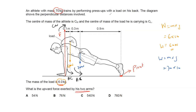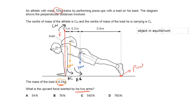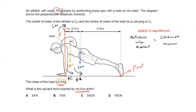When solving these questions, we assume the object is in equilibrium — it is balanced. When the object is in equilibrium, we say the anti-clockwise moment is equal to the clockwise moment. The weight of the athlete and the load are causing anti-clockwise moments, while the upward force of the arms causes a clockwise moment.